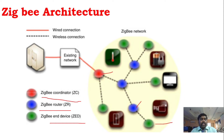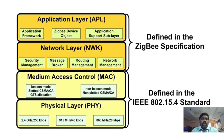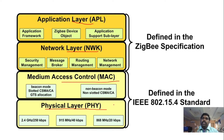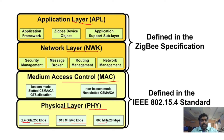Zigbee has layers: a physical layer, MAC layer, network layer, and application layer. Similar to Wi-Fi, Zigbee uses CSMA-CA technology — Carrier Sense Multiple Access Collision Avoidance. The physical layer controls modulation techniques, physical link, and data rate. It supports 2.4 GHz, 900 MHz, and 868 MHz bands with data rates of 250 kbps, 40 kbps, and 20 kbps respectively.